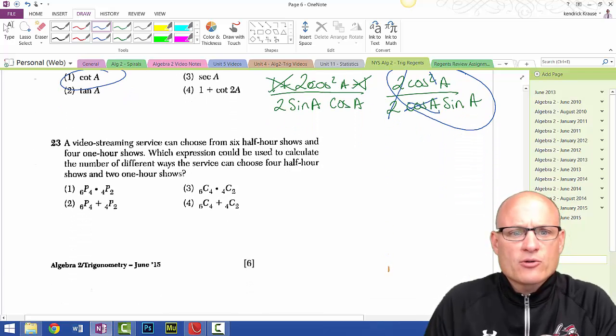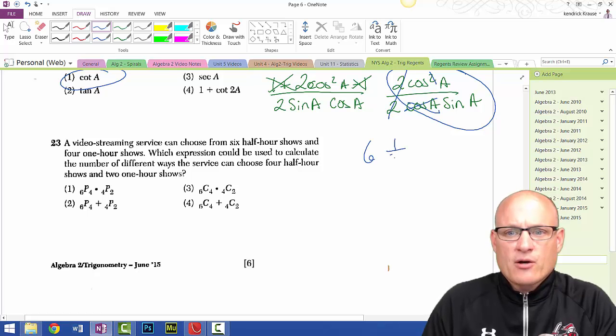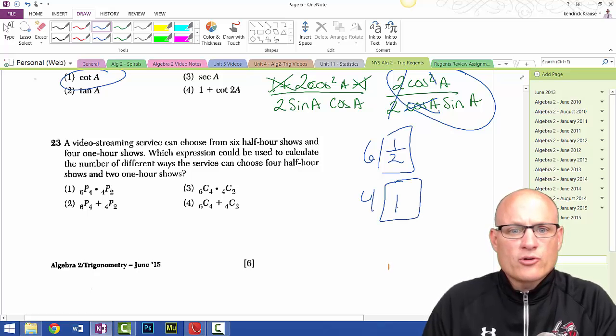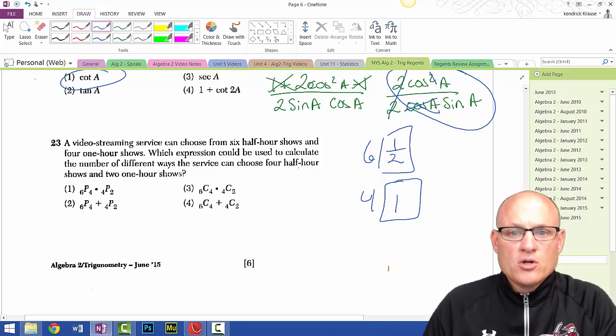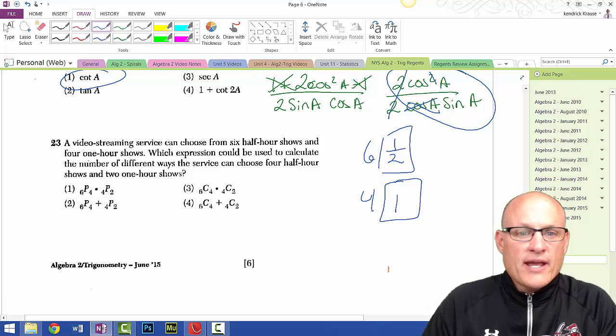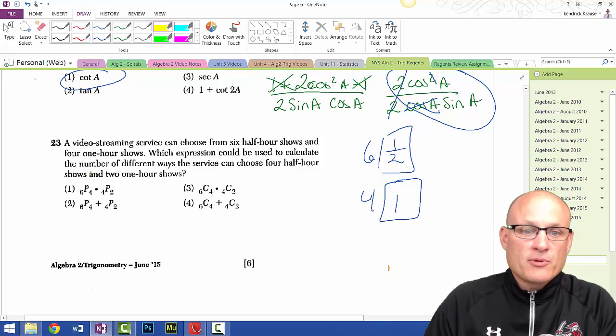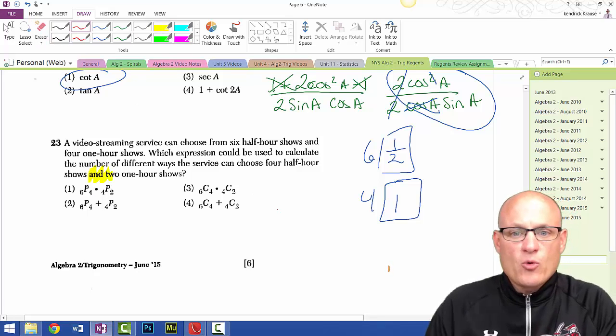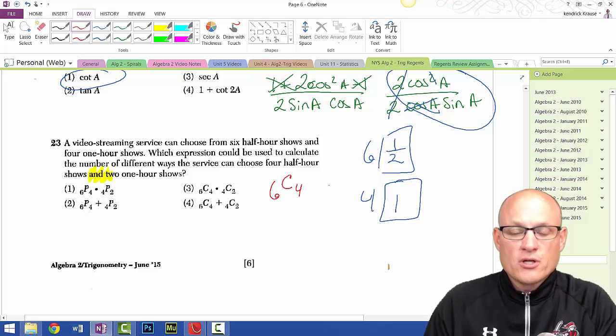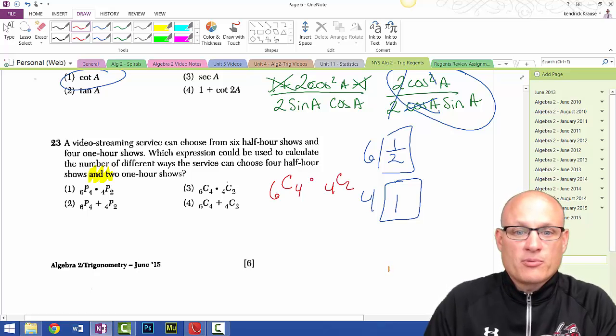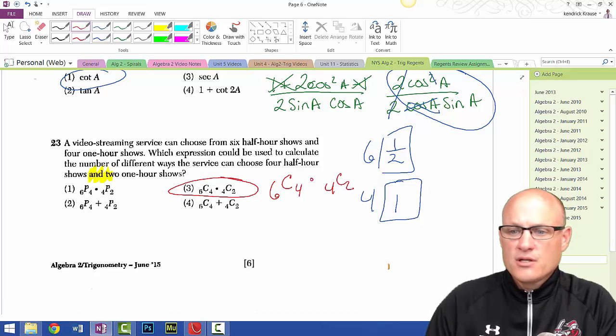Question 23: Video streaming gives 6 half-hour shows and 4 one-hour shows. Which expression can be used to calculate the number of different ways the service can choose 4 half-hour shows and 2 one-hour shows? See this word 'and'? And means multiplication. So we're going to multiply. The way to choose 4 half-hour shows is 6 choose 4. The way to choose 2 one-hour shows is 4 choose 2. And we want to multiply those. So that's choice 3.